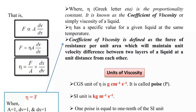When eta, Greek letter eta, is the proportionality constant, it is known as coefficient of viscosity or simply viscosity of a liquid. Eta has a specific value for a given liquid at the same temperature.